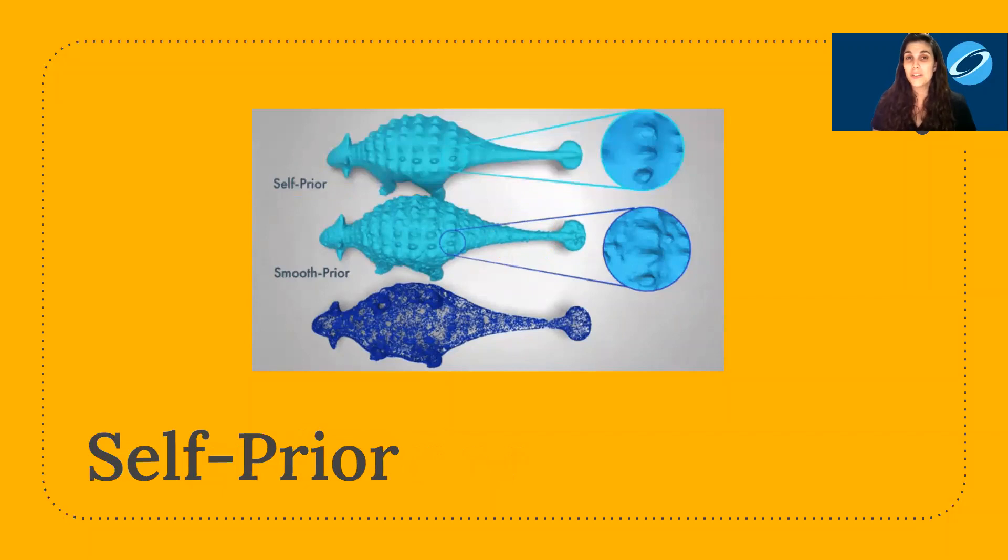In this work we introduce the idea of a self-prior, where the prior is learned on the fly from the input point cloud itself. You can already see that the ridges on the dinosaur back are faithfully reconstructed while still removing noise and outliers.